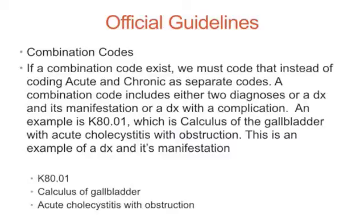Combination Codes: If a combination code exists, we must use that instead of coding acute and chronic as separate codes. A combination code includes either two diagnoses, or a DX and its manifestation, or a DX with a complication. An example is K80.01, which is calculus of the gallbladder with acute cholecystitis with obstruction — an example of a DX and its manifestation.